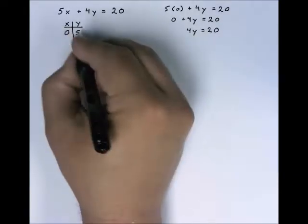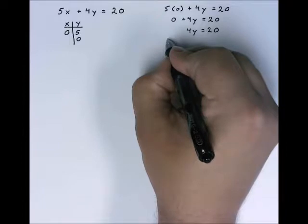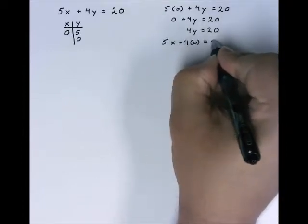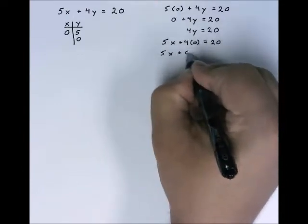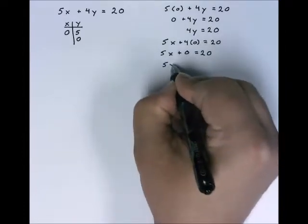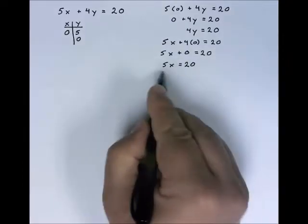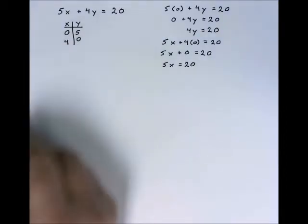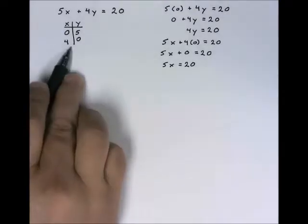And now I'm going to do the same thing for the y. I'm going to plug 0 in for y. And when I do that, again, anything times 0 is 0. And hopefully, again, you can do this in your head. Divide both sides by 5 and get x equals 4. So now we have an x-intercept of 4, 0, and a y-intercept of 0, 5.